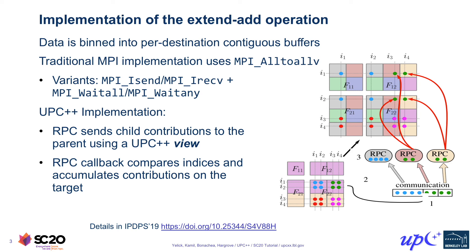What does extend-add look like? Data is binned into destinations based on the processors, and the color coding indicates that each color refers to a different processor. This is a 2x3 processor grid, and the sparse matrix is distributed in a 2D block-cyclic manner. In the upper block of the parent, F11, all six colors are represented — each of the six processors has one of those blocks, reminding you that each one is sparse. In the block-cyclic layout you can see the repeated pattern across the union of all blocks in the parent matrix.